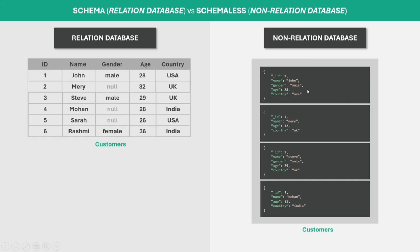For example, in the first document we are storing the gender of the customer, but in the second document the gender field is not specified, and that is completely okay — we are not going to get any error in MongoDB. In MongoDB, you do not have a predefined schema for the documents. Documents can have different structures even within the same collection, meaning you can add or remove fields as needed without having to modify the entire schema. You can have two or more documents with different numbers of fields and different types of fields, and MongoDB will not complain about that.